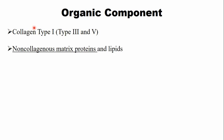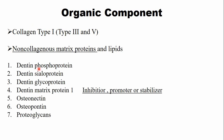There are also non-collagenous proteins, including dentine phosphoprotein, dentine sialoprotein, and dentine glycoproteins, which play roles as promoters, inhibitors, or stabilizers of the mineralization process. The organic component of dentine has similarities with bone — in bone, type 1 collagen is also present, along with non-collagenous proteins such as osteonectin, osteopontin, and proteoglycans.